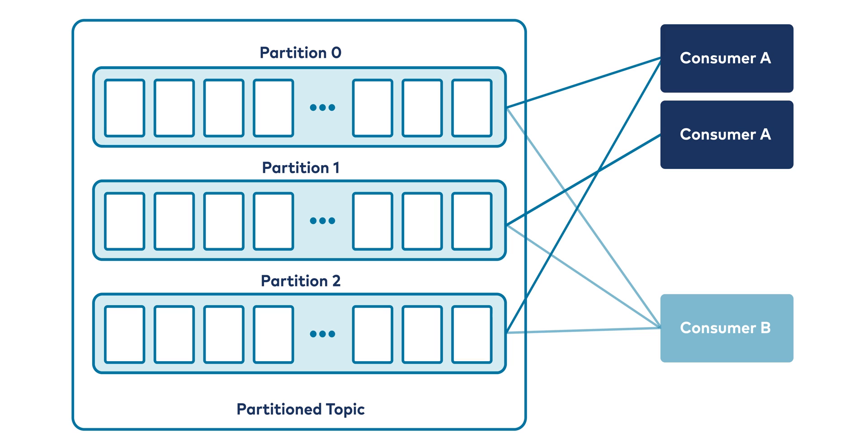If you add a second instance of that consuming application — same program running on a different server, a new container, whatever — presenting the same group ID configuration parameter to the cluster, that triggers an automatic rebalancing process. The Kafka cluster, combined with those client nodes, will work together to distribute partitions fairly between the two instances. That rebalancing process repeats each time you add or remove a consumer group instance, whether that's an operator-initiated scale-out or because a node dies. This makes each consuming application horizontally and elastically scalable by default.